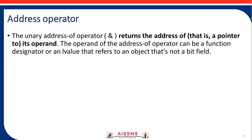Address operator - the unary address-of operator & returns the address, that is the pointer, to its operand. The operand of the address-of operator can be a function designator or an l-value that refers to an object that is not a bit field.